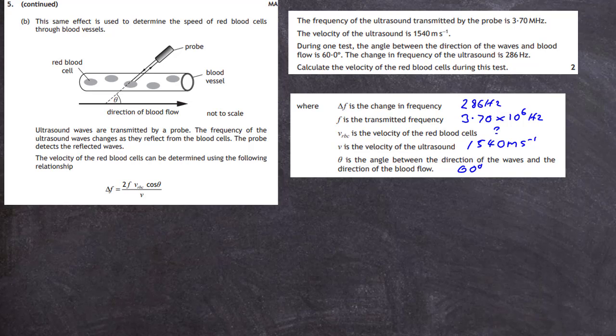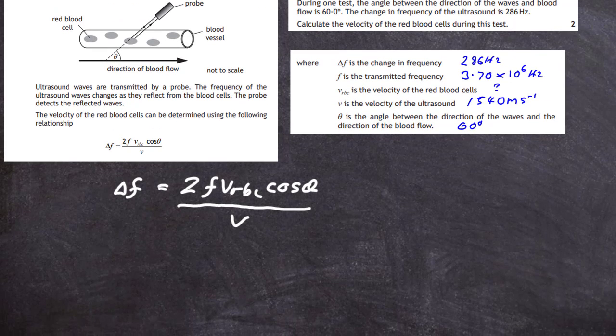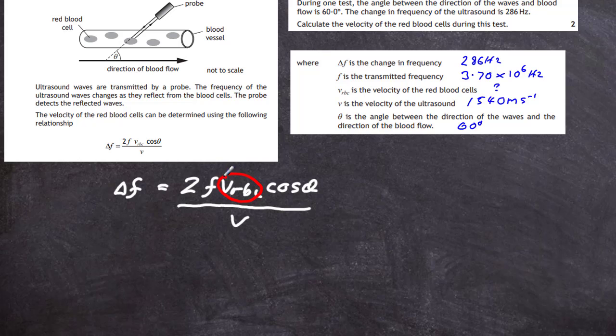Our equation is delta F equals 2 times F times V_RBC times cos theta divided by V. To rearrange, I'm looking for V_RBC. To get rid of V in the bottom, multiply across by V. So delta F times V equals 2 times F times V_RBC times cos theta.